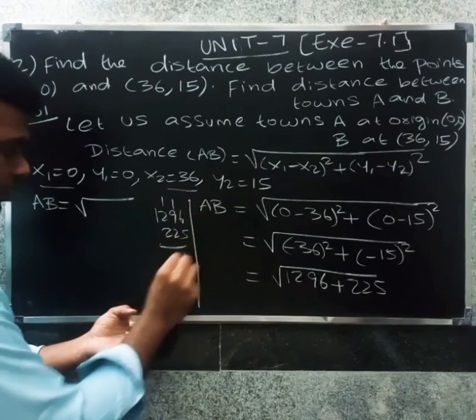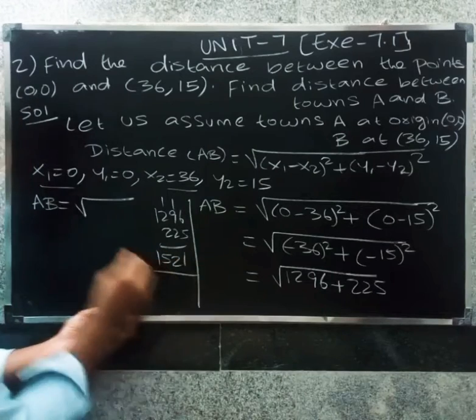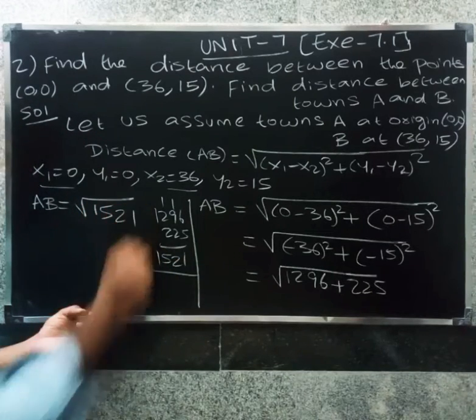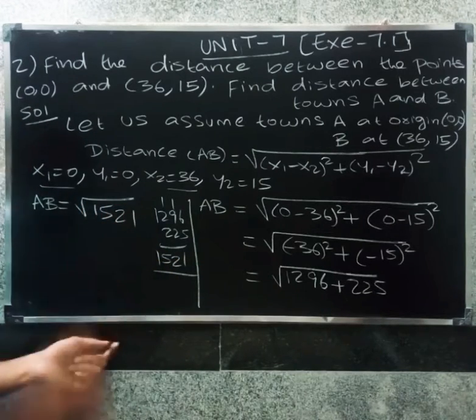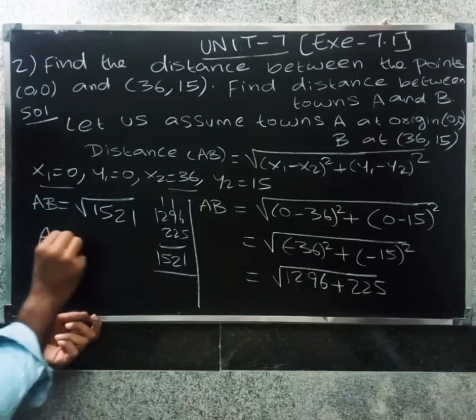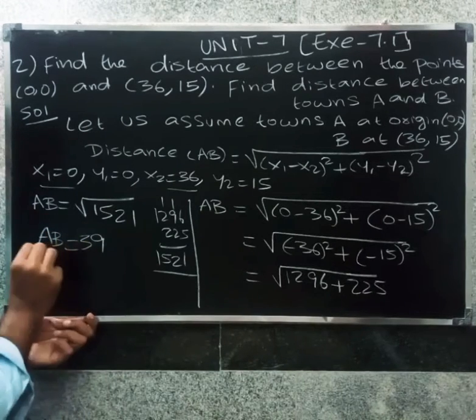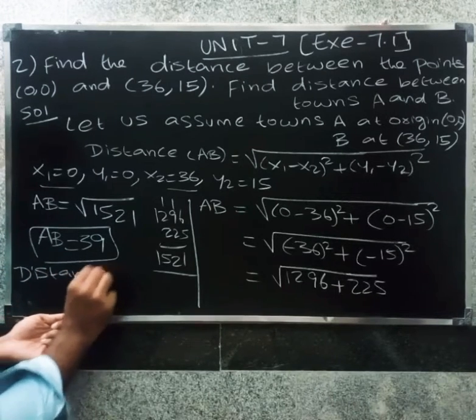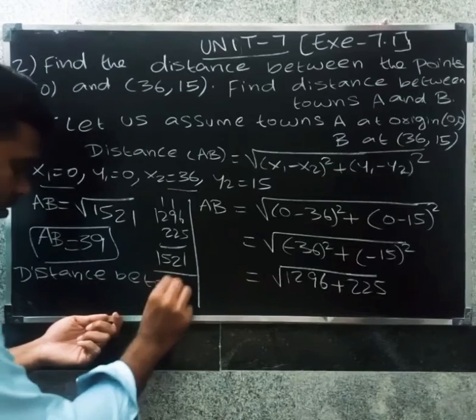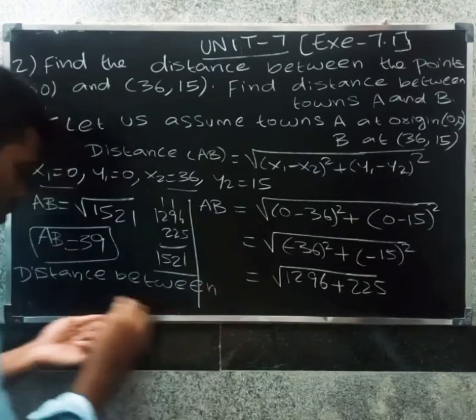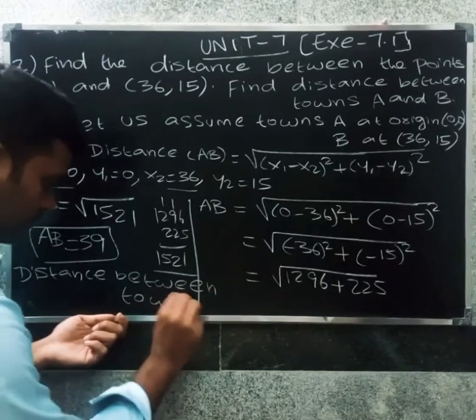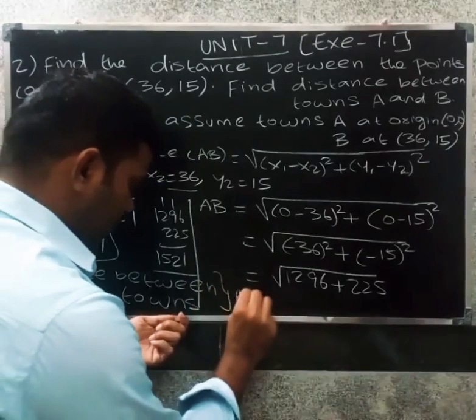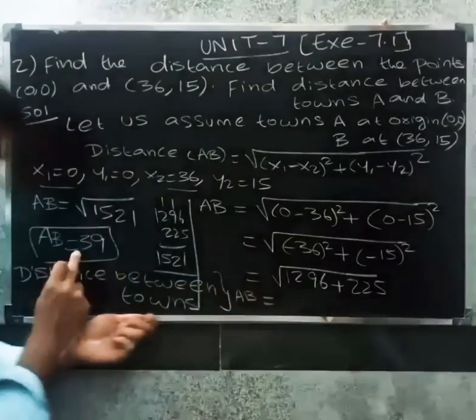So square root of 1521. Square root of 1521 value, we will get 39. So distance between towns AB equal to distance between towns AB equal to 39 kilometers.